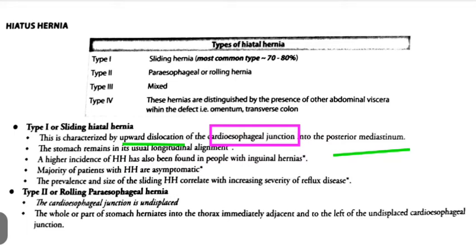The key point to remember is that even though there is upward dislocation of the cardio-esophageal junction and the cardiac portion of the stomach, the stomach still remains in its usual longitudinal alignment — this is a potential exam question. Also note that there is a higher incidence of hiatal hernia in people who also have inguinal hernia — another potential question. The majority of patients with hiatal hernia are asymptomatic.